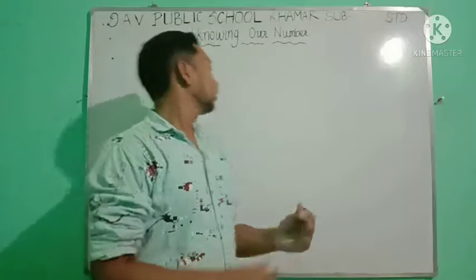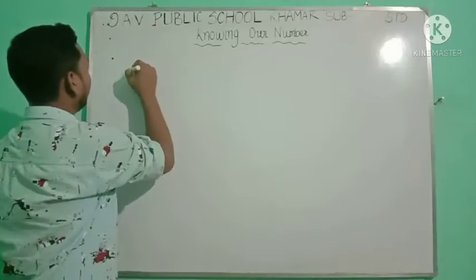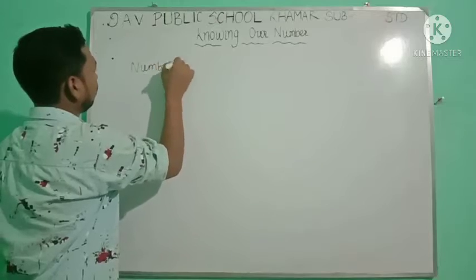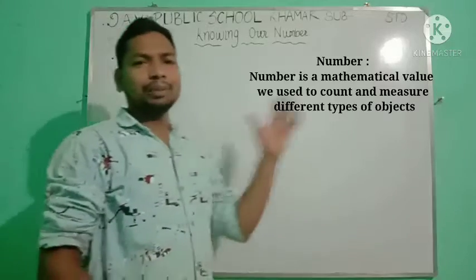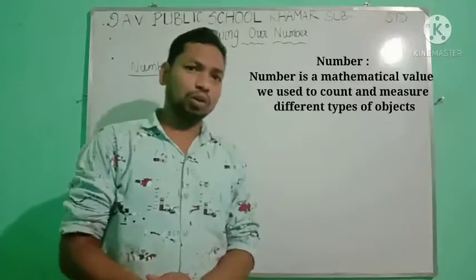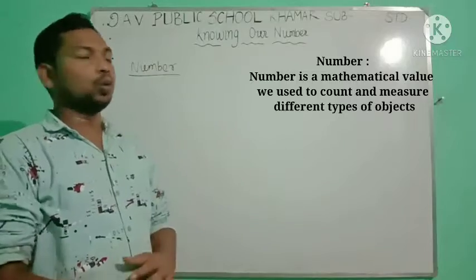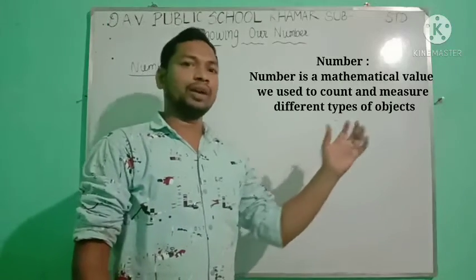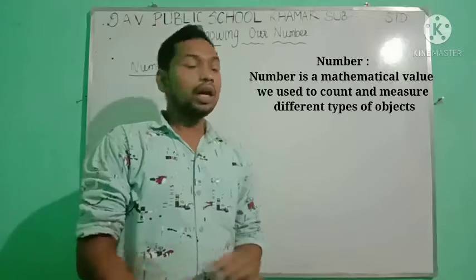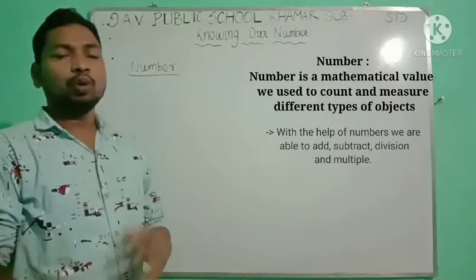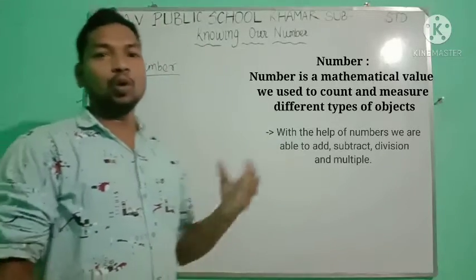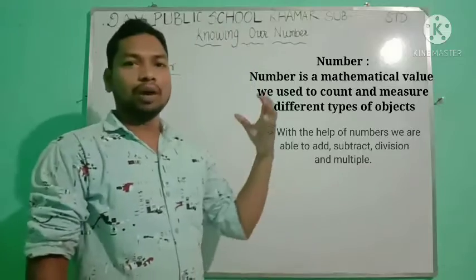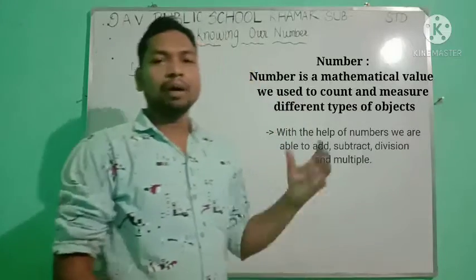First we will discuss about what is a number. A number is a mathematical value we use to count and measure different types of objects. With the help of numbers, we are able to add, subtract, divide, and multiply.